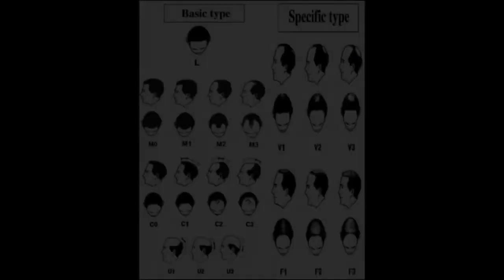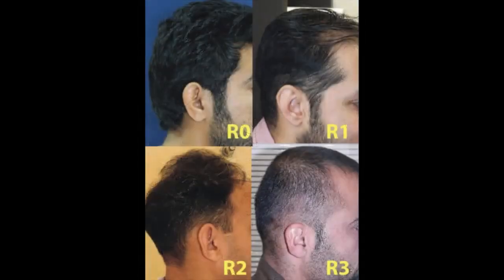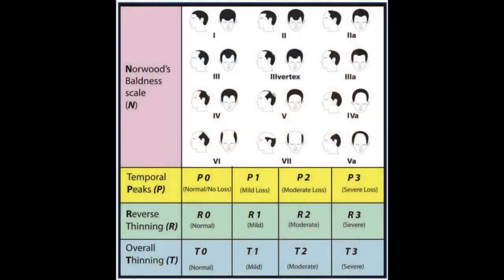While some balding patterns like the receding hairline or crown thinning are more common, DUPA and even retrograde alopecia, which affects the sides of the scalp, are rarer. These variations have been attributed to genetic diversity that manifests differently amongst people. This genetic diversity is in reference to the sensitivity of the hair follicles to DHT and how it can vary in different regions of the scalp.